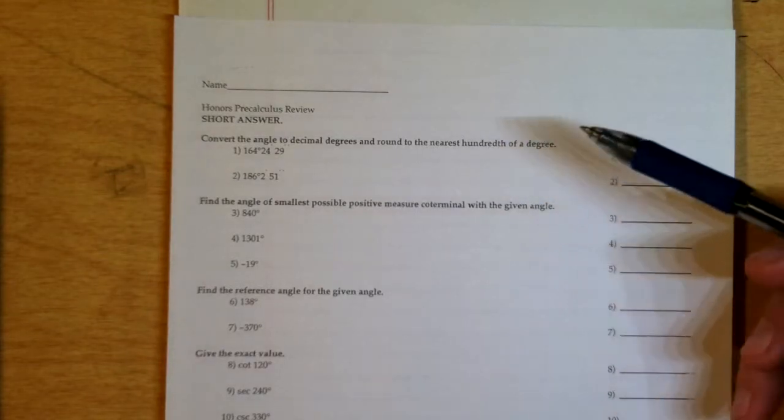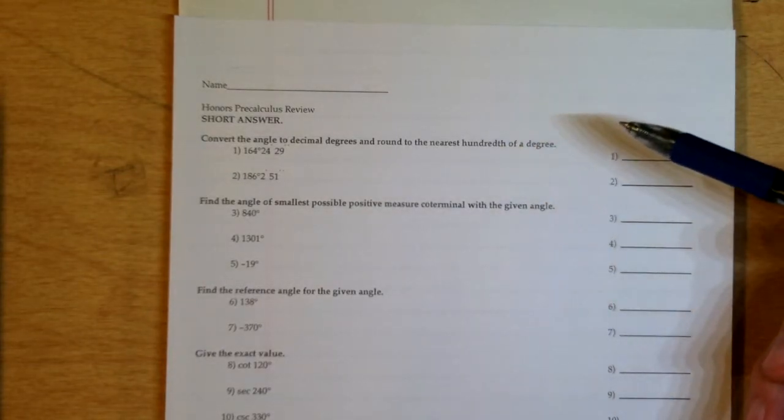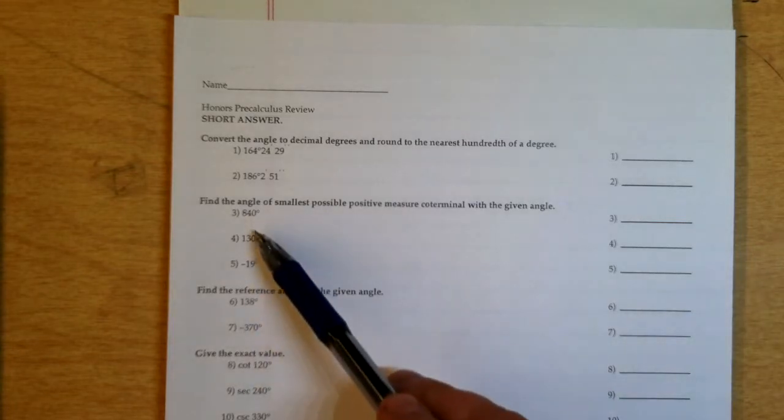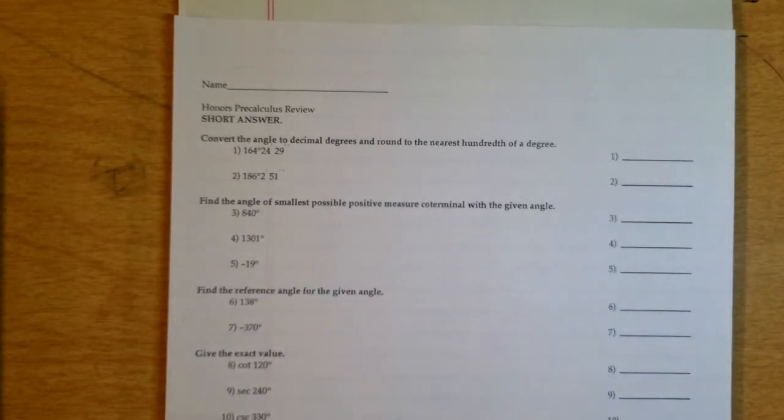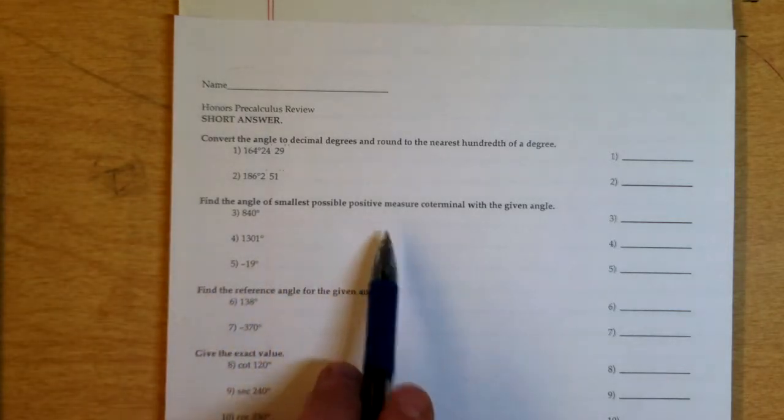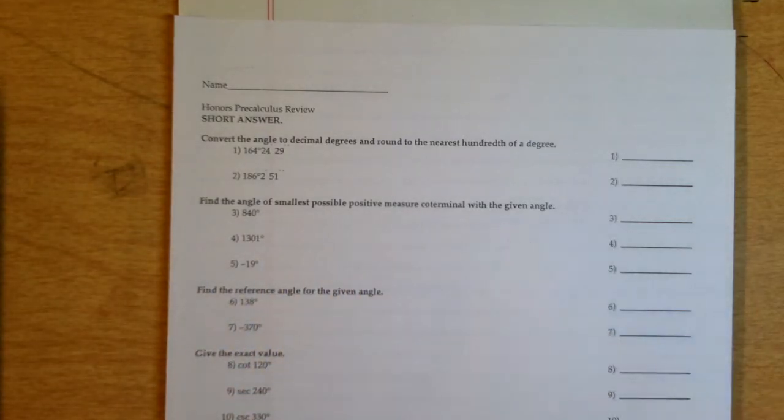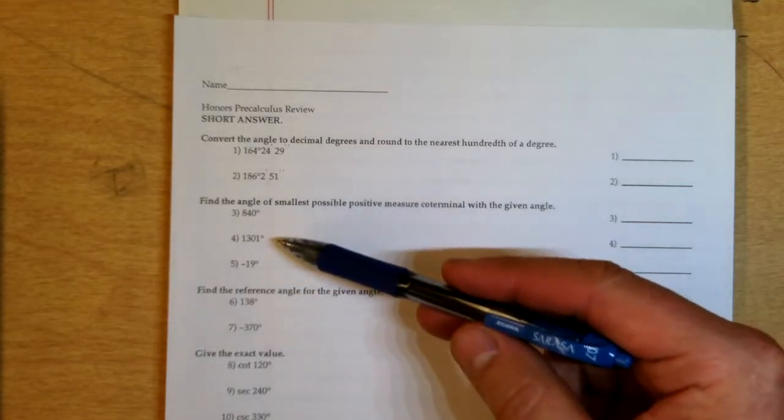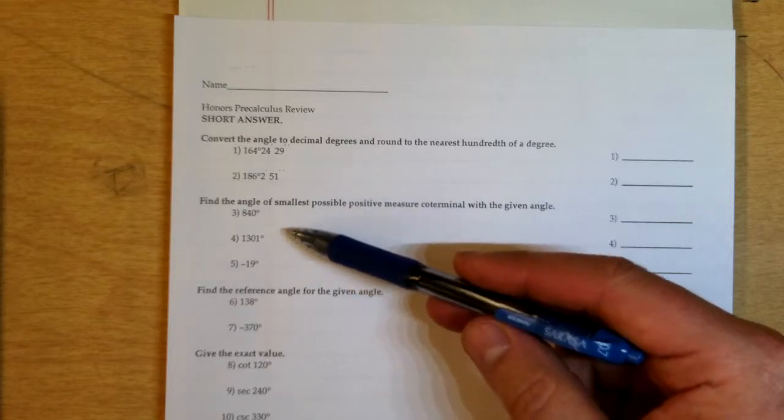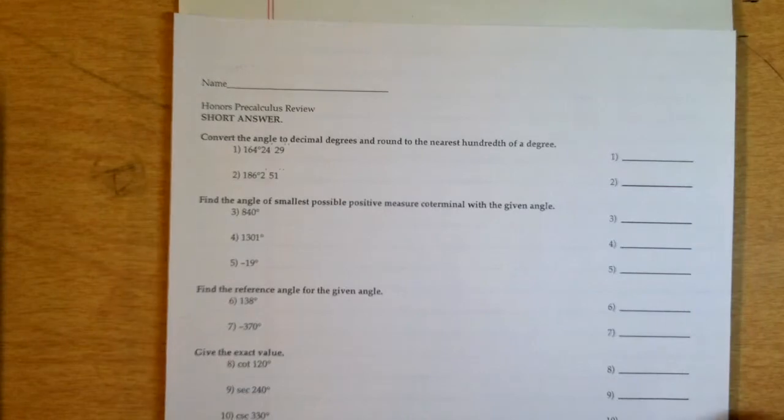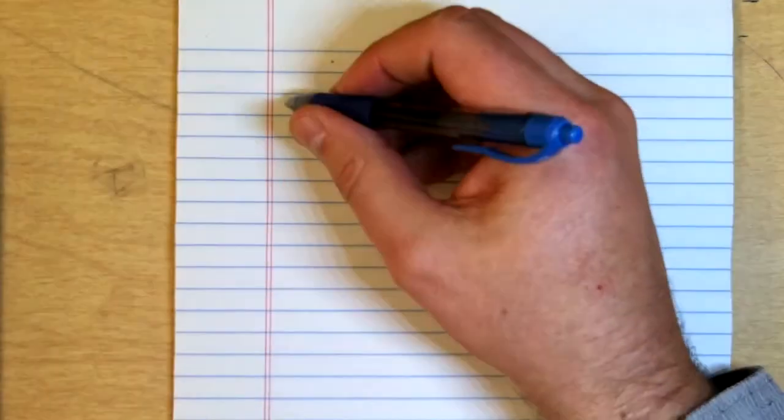This is the honors calculus final exam review for 2013. We're looking at numbers 3, 4, and 5. This tells us to find the angle of smallest possible positive measure coterminal with the given angle. They give us angles with high degree numbers like 840 degrees or 1301 degrees, or negative angles like negative 19 degrees. So let's look at number 3.